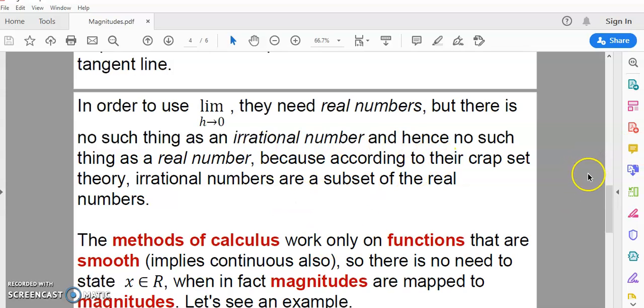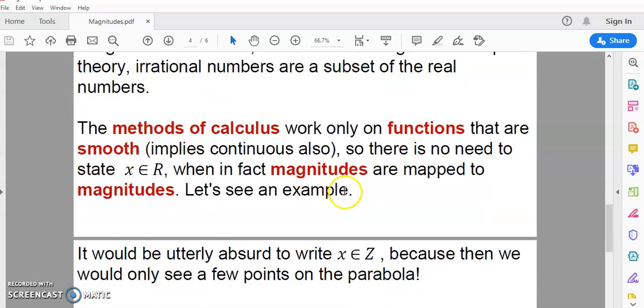Now, the methods of calculus work only on functions that are smooth, which means that the function is also continuous. To be smooth over an interval, a function must have, it must be possible to construct exactly one tangent line at every point in that interval. If you have more than one tangent line, then it's not smooth, and you can't apply the methods of calculus. You have to basically break it up at that point. All right. So, I'm not going to go into that because I've gone into that in my free e-book, to which I'll also place a link. So, there is no need to state x as an element of R when, in fact, magnitudes are mapped to magnitudes. Let's see an example.